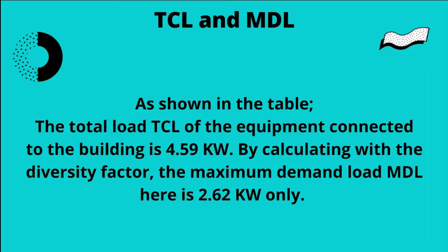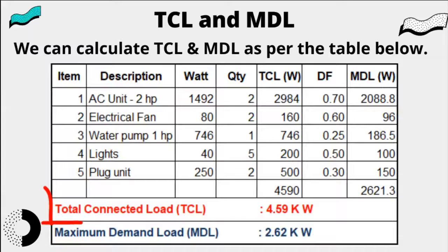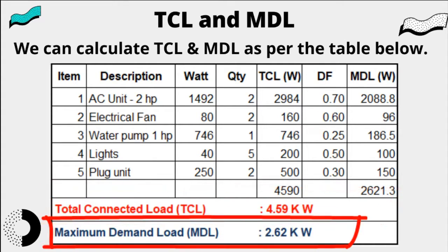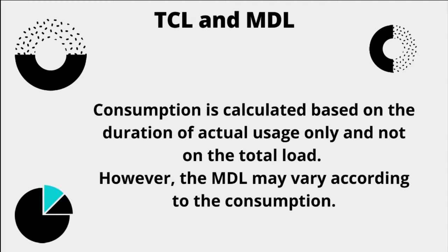As shown in the table, the total connected load of the building is 4.59 kW. According to the diversity factor, the maximum demand load is only 2.62 kW. Consumption is calculated based on the duration of actual usage only, and not on the total load.